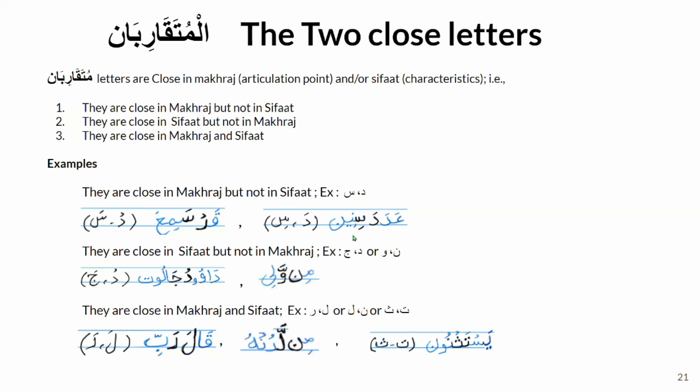The letters dal and sin appear next to each other in examples like 'adada sinin' and 'qad sami'a,' appearing as mutaqariban letters. Letter sin and letter dal use the same part of the organ — the tip of the tongue — but dal touches just behind the upper teeth while sin is behind the lower teeth. They are close in makhraj but not exactly the same place, and their characteristics are different: dal is a letter of shiddah and jahar (and qalqala when sakin), while sin is a letter of safir, rakhawa, and hams. This shows they are not close in sifat but are close in makhraj.